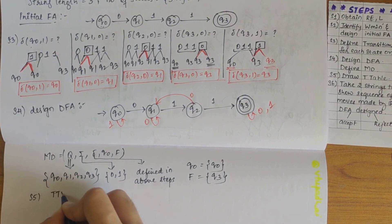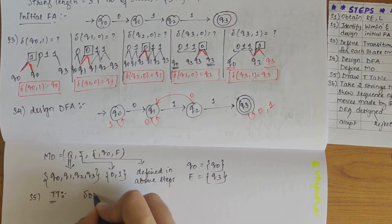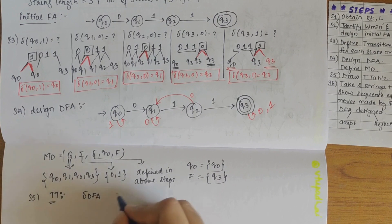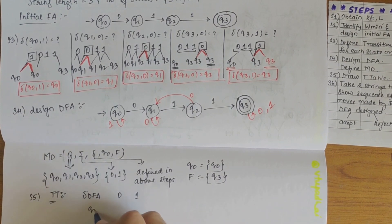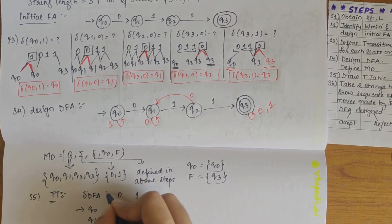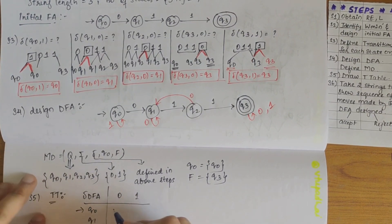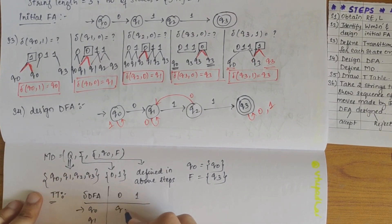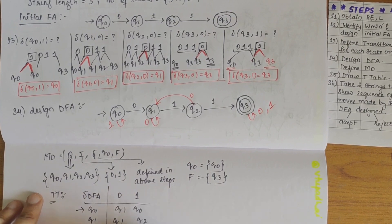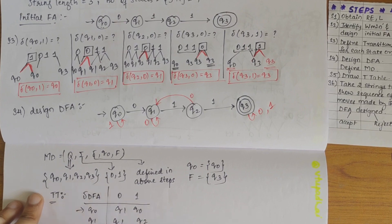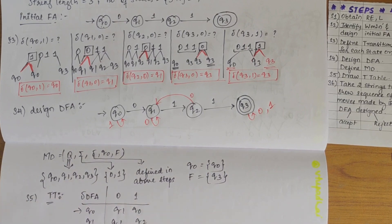Our next step is to draw the transition table. We fill in transitions for all states: Q2 on 0 gives Q1, Q2 on 1 gives Q3, Q3 on 0 gives Q3, and Q3 on 1 also returns Q3. Q3 is the final state and Q0 is the start state.